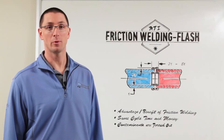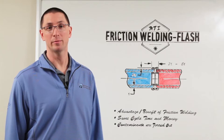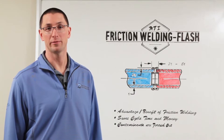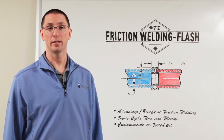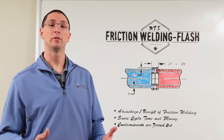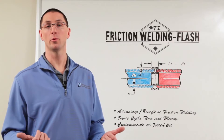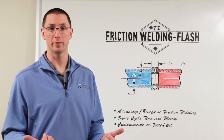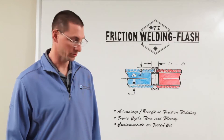Thanks for joining me for MTI's Whiteboard Wednesdays. I'm Dan Adams. Today we're talking about friction welding flash. One of the frequently asked questions about friction welding is about flash formation. As we heat the two parts up and the material at the weld interface softens, it starts to extrude away from the weld interface. That extruded material is called flash.